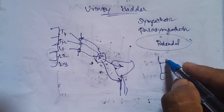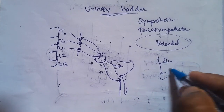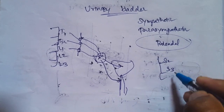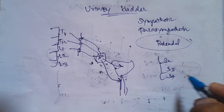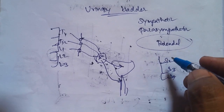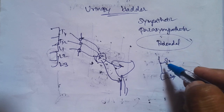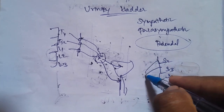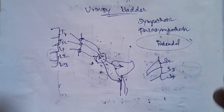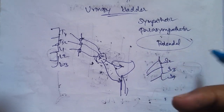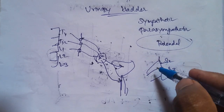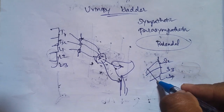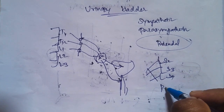The parasympathetic area arises from spinal levels S1, S2, S3, and S4. This is the parasympathetic area. The nerve from this region is the Pelvic Nerve.